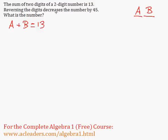And here we know that reversing the digits decreases the number by 45. So for our original number, the value of the original number will be 10A plus B.